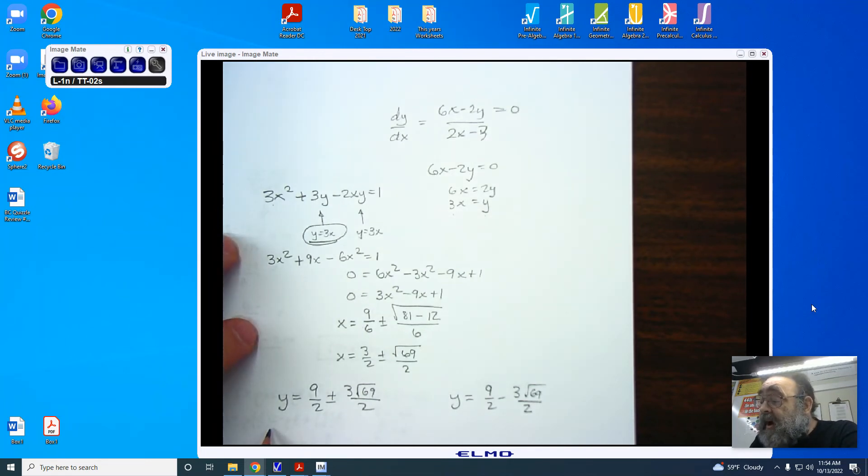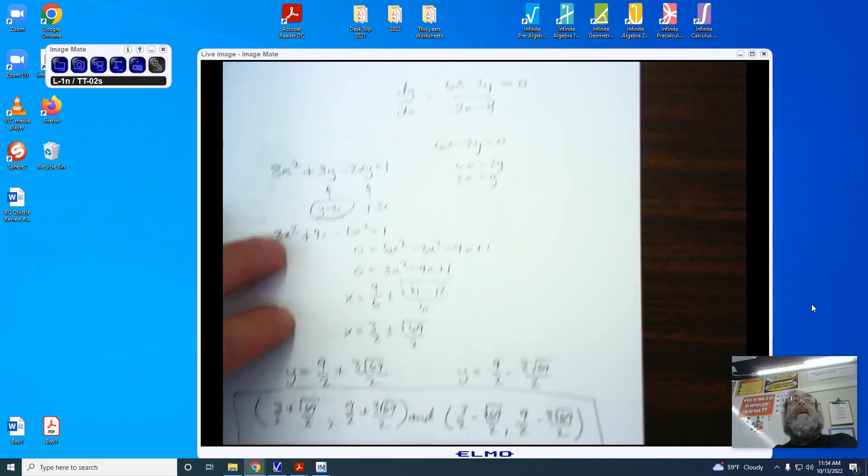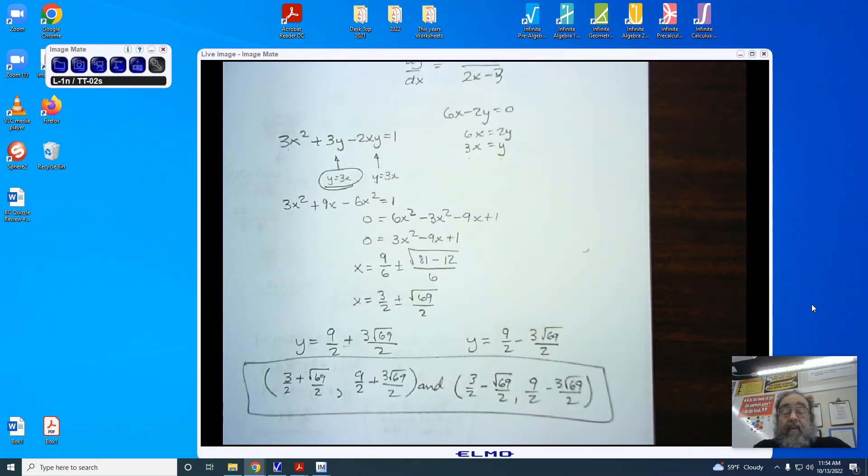I now have to write my two points. 3 halves plus the square root of 69 halves, comma, 9 halves plus 3 root 69 halves. And second equation, 3 halves minus root 69 halves, 9 halves minus 3 root 69 halves. Now those are the values or the points on the curve where f of x is going to have a horizontal tangent line.